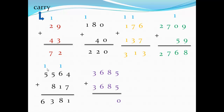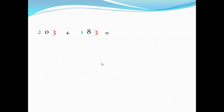Four digits plus four digits: five plus five equals ten — write zero and carry one. One plus eight plus eight equals seventeen — write seven and carry one. One plus six plus six equals thirteen, write three and carry one. One plus three plus three equals seven.